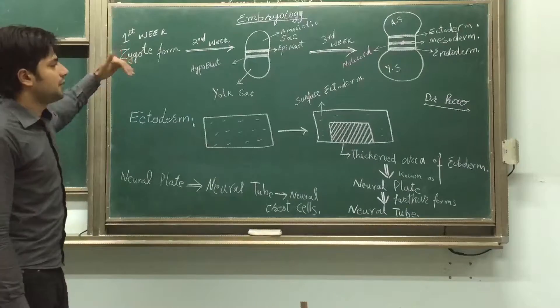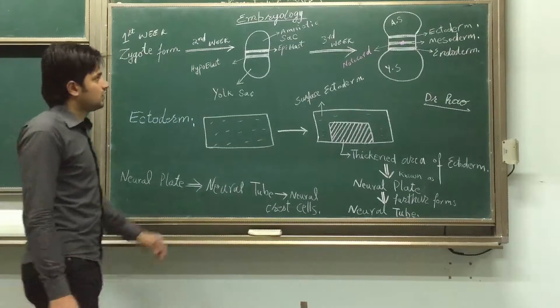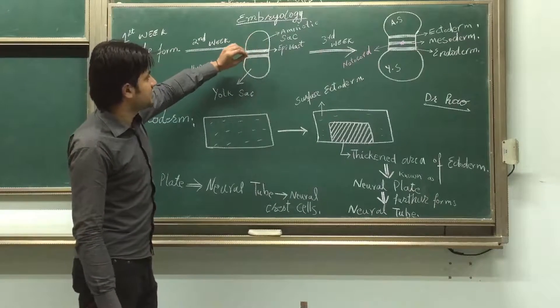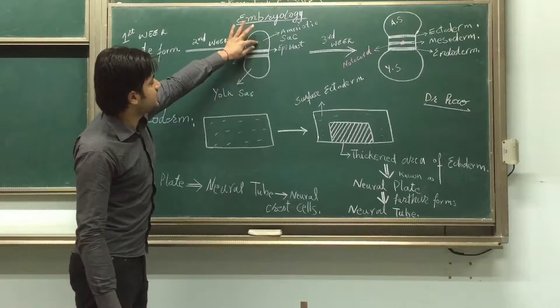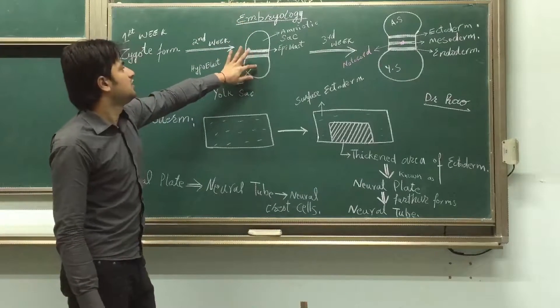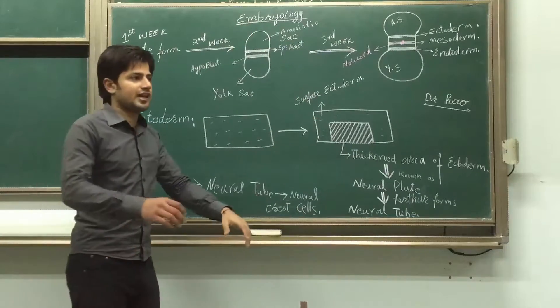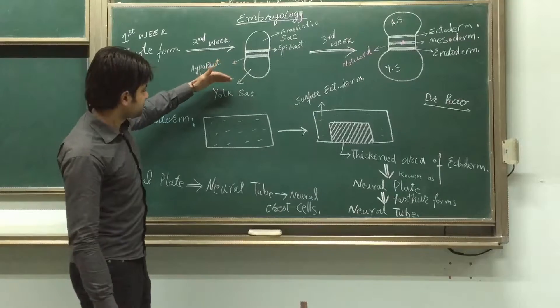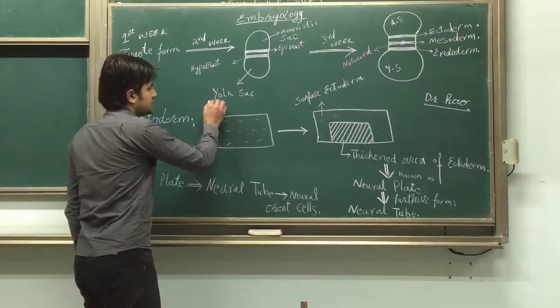In the second week, there are some changes that occur. The zygote is divided into two cavities: the upper cavity and the lower cavity. The upper cavity is known as the amniotic sac because it has amniotic fluid inside it, and the other is the yolk sac.